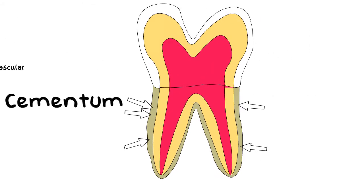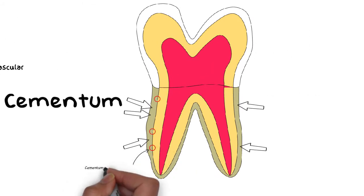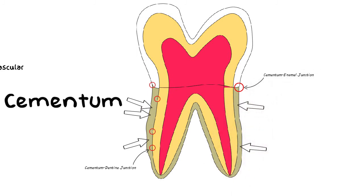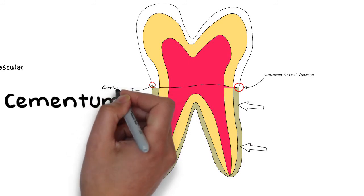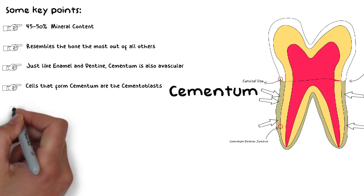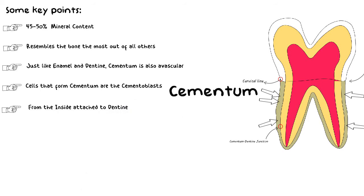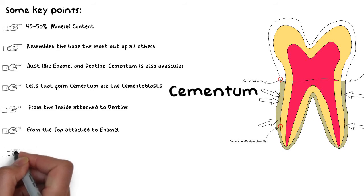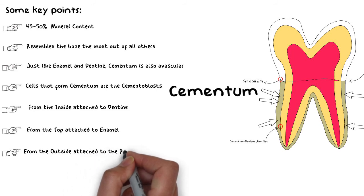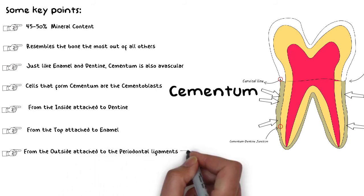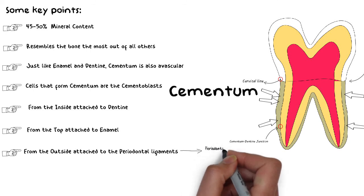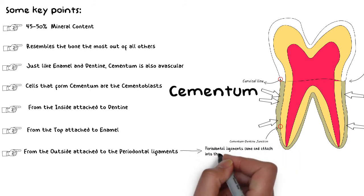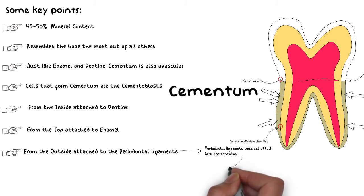From the inside, the cementum continues with the dentine, just like the enamel. On the top, it joins with the enamel — this joint between the enamel and the cementum is known as the cervical line. From the outside, cementum has a crucial role of providing attachment to the tooth by attaching to the periodontal ligaments, though the periodontal ligaments are not strictly part of the tooth — the cementum and periodontal ligaments are interrelated to one another.